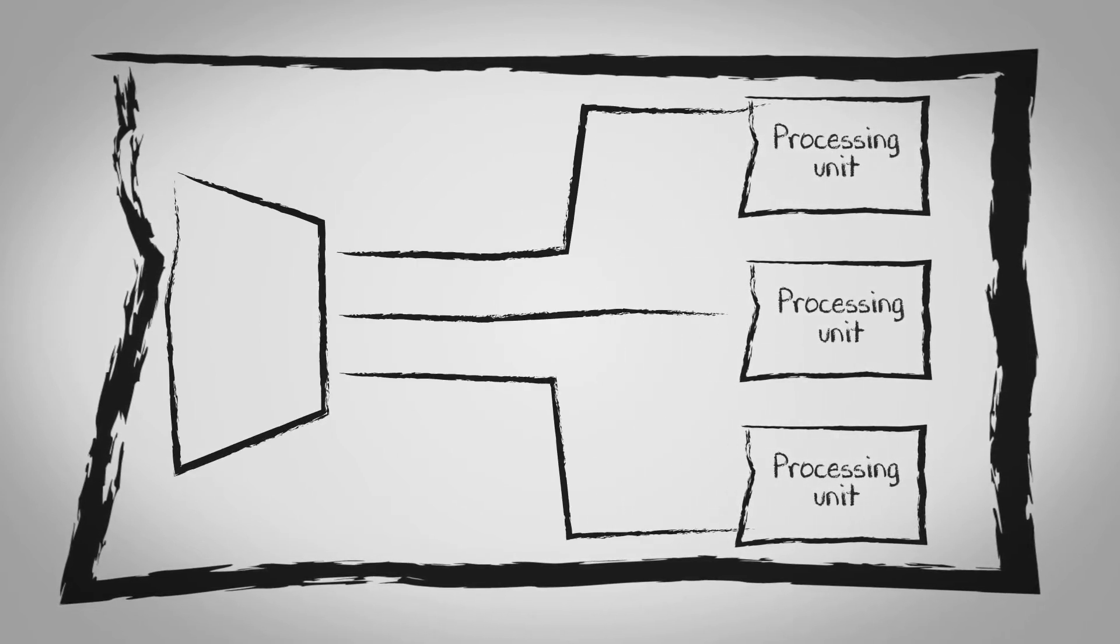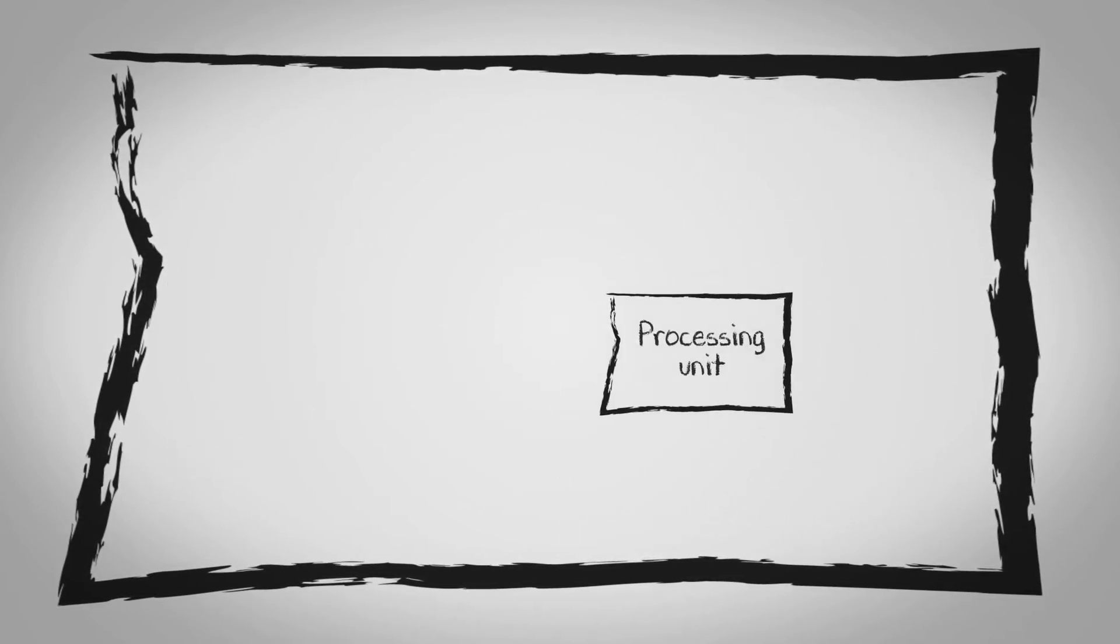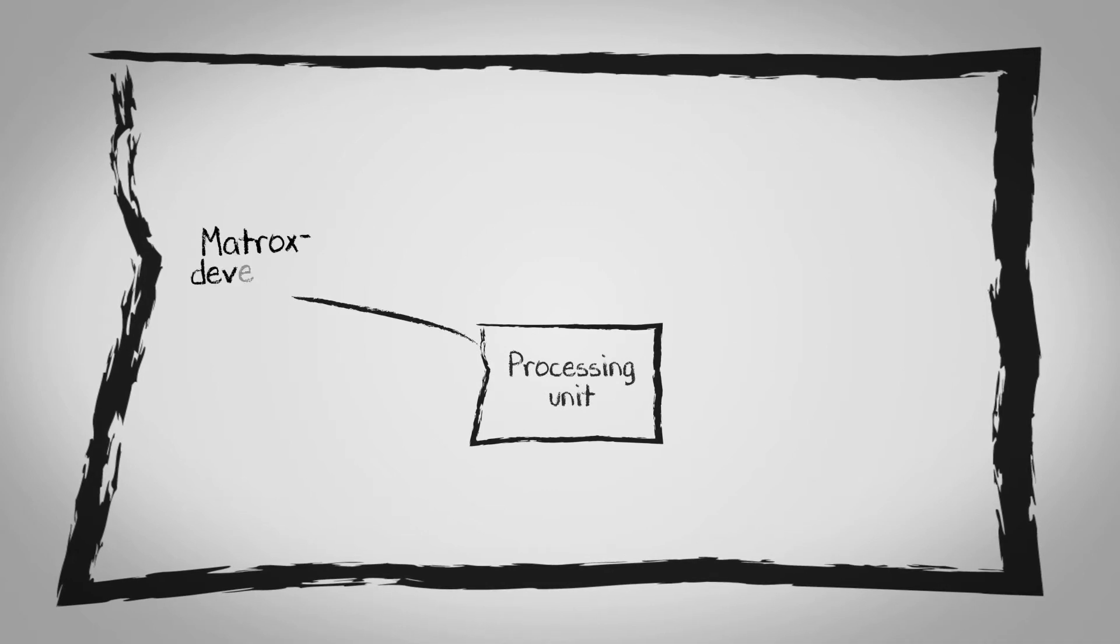A processing unit can come from different sources. It can be Matrox developed, it can be based on third-party IP, or users can develop their own in C or C++.